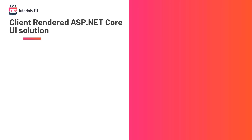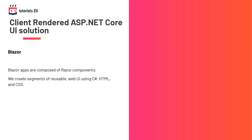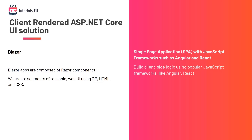Blazor apps are built using Razor components, and both client and server code is written in C#. Blazor works well with modern browsers using open web standards without plugins. We can alternatively create single page applications with JavaScript frameworks like React and Angular — popular but potentially hard to maintain with evolving framework languages. We're going to check out Blazor, Razor and MVC in this course, so this was just to give you an overview of what you can expect.